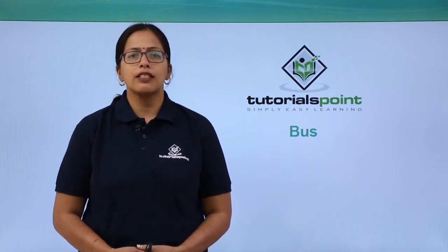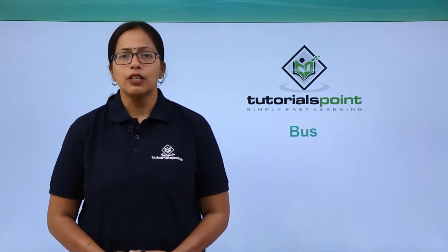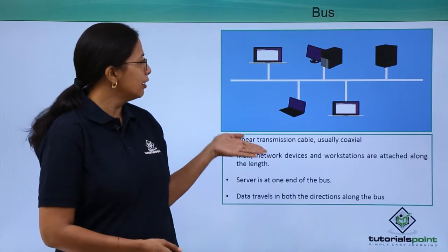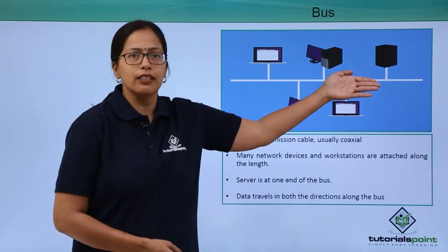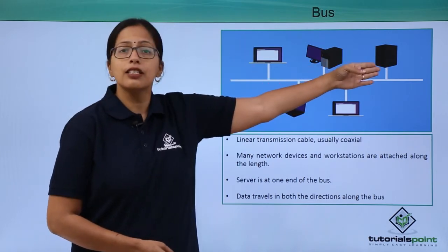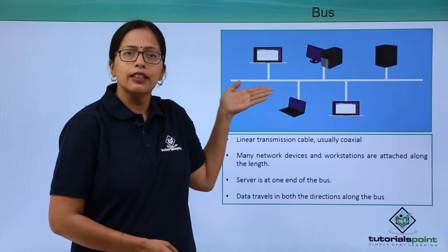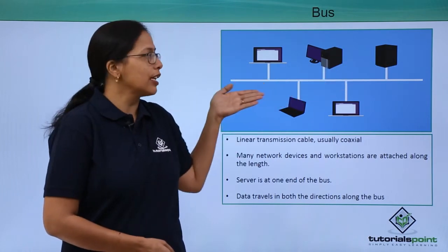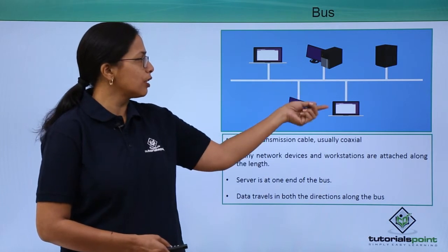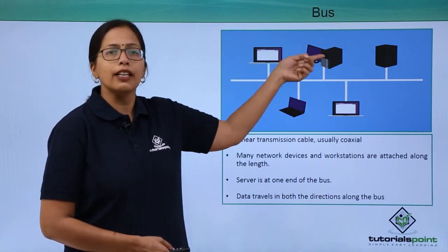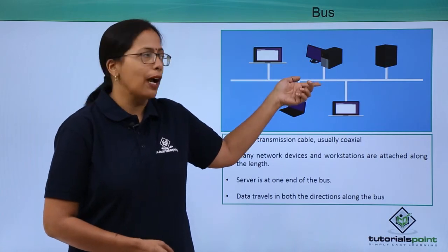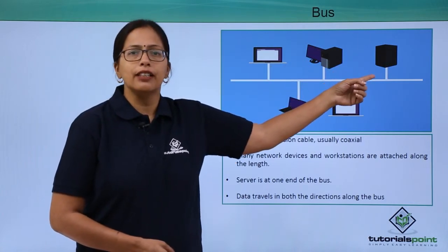In this video we are going to discuss bus network topology. As you can see, there is a linear line in the center with workstations attached on both sides and a server at one end of this coaxial line. This central line is made up of coaxial cable, and there are small cable segments which connect each of these workstations to the main backbone.